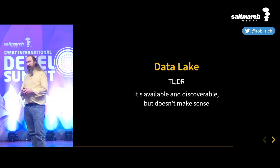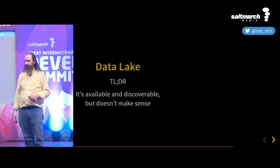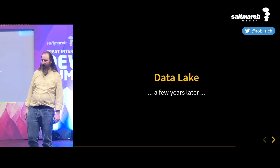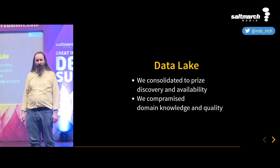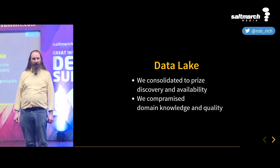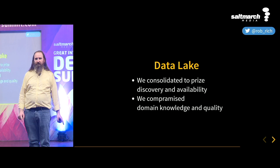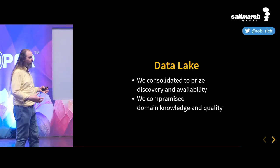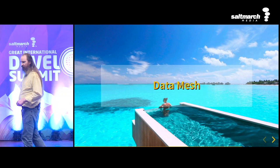So our data lake: we optimized for making that data available, but we kind of took away the specialization. Fast forward a few more years — how do we avoid the swamp? We specifically prioritized availability over discoverability, and discoverability over knowledge and quality. What if we undid that assumption? We still want that SLA, we still want it to be highly available, we still like this discoverability and data mart methodology. Let's see if we can keep that but also add that specialization. Let's create a data mesh.